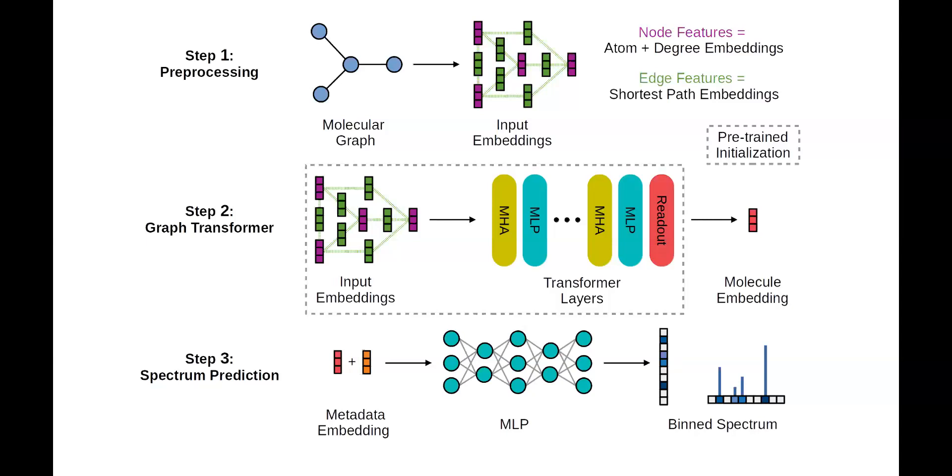These features are passed through a relatively standard transformer architecture, which iteratively applies multi-head self-attention and multi-layer perceptrons to process the data. After many iterations, the chemical information is pooled into a molecule embedding. This molecule embedding is combined with spectral metadata, such as the collision energy, and passed to a multi-layer perceptron, which produces a sparse positive vector that represents the binned spectrum. The model is optimized to predict spectra with high cosine similarity to ground truth data.